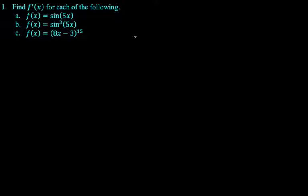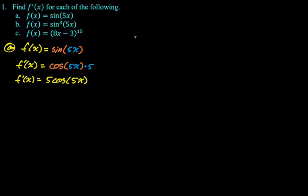Alright, we want to find f'(x) for each of the following: f(x) is sin(5x), and then sin³(5x), and then just randomly the quantity (8x-3)^15. So chain rule problems, basically. Alright, so first up, we want to deal with f(x) is sin(5x). So the derivative f' of sin(5x), the derivative of sine of something is cosine of that thing times the derivative of that thing. The derivative of 5x is 5, that's our derivative. Typically you would rewrite that as 5cos(5x).